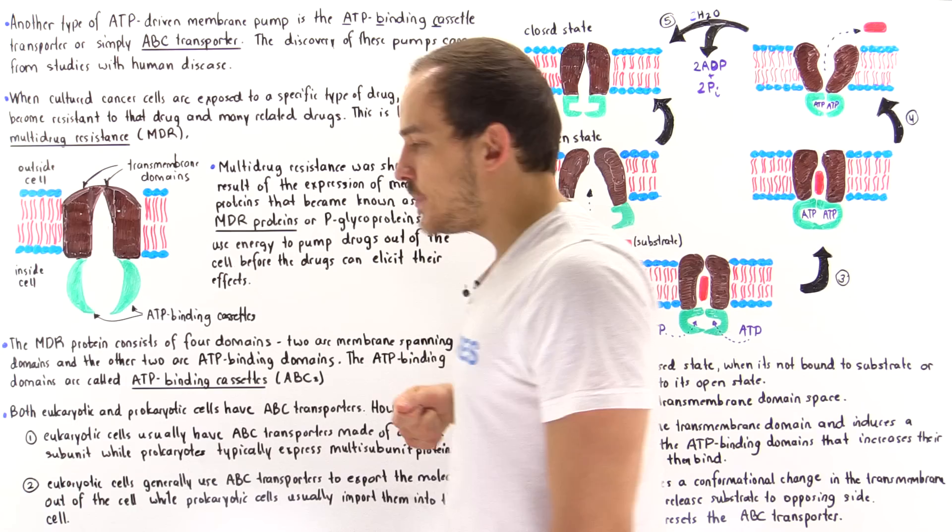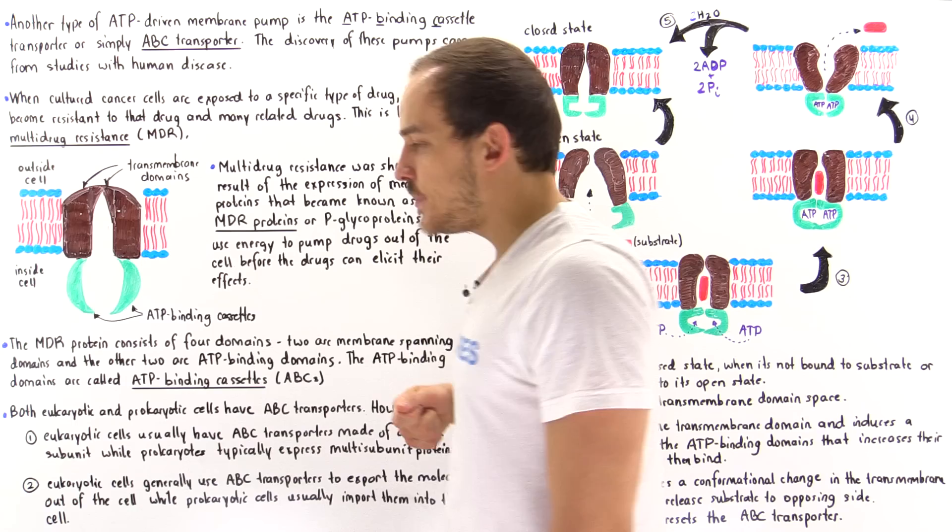Both P-type ATPases and ABC transporters carry out the same function: they transport molecules against the electrochemical gradient using ATP energy. However, the mechanisms by which they carry out these processes are slightly different, as we saw in this lecture.